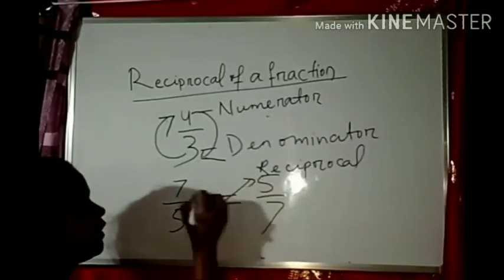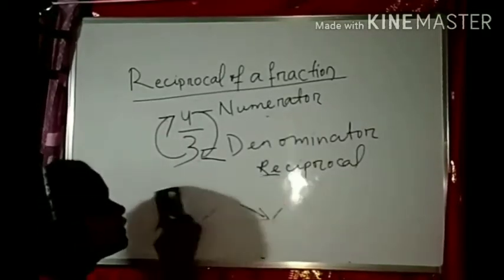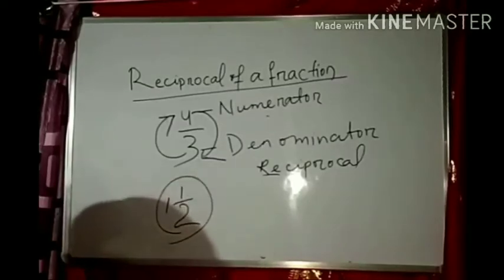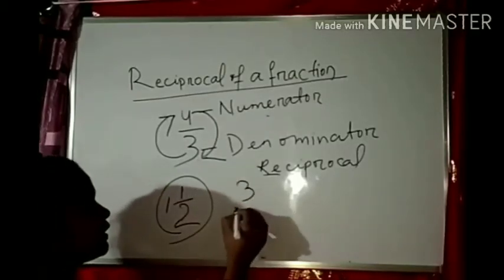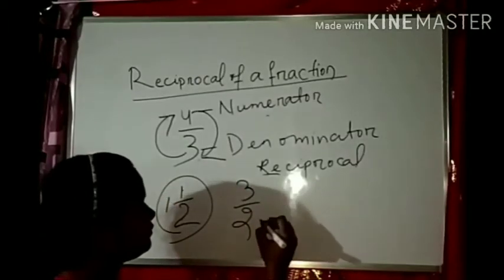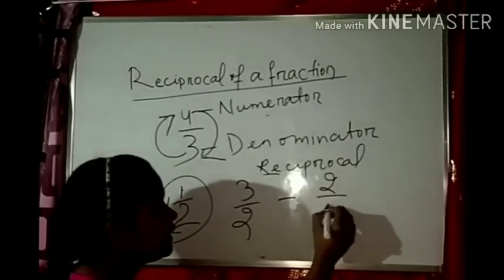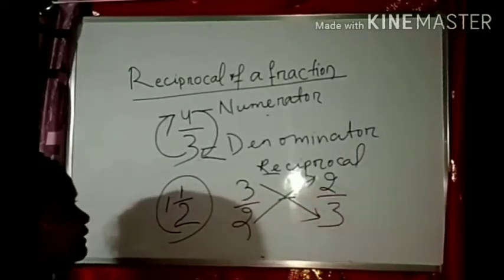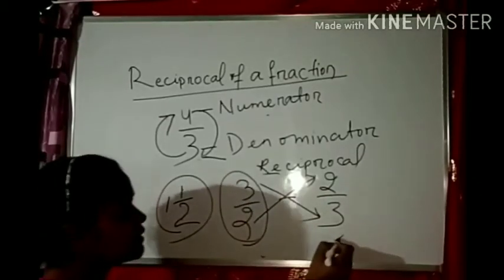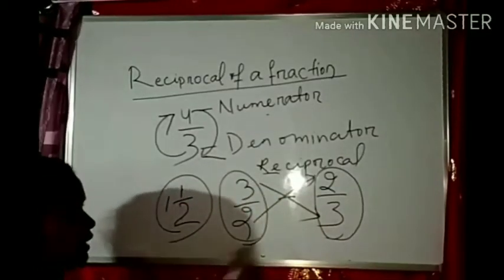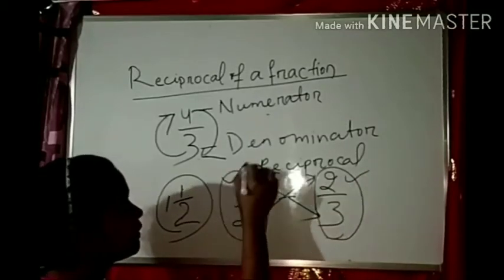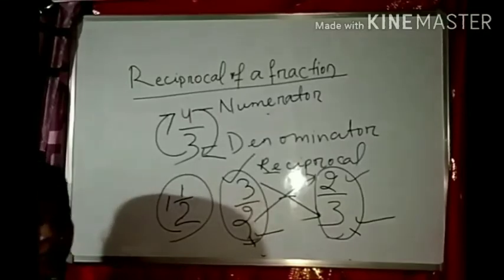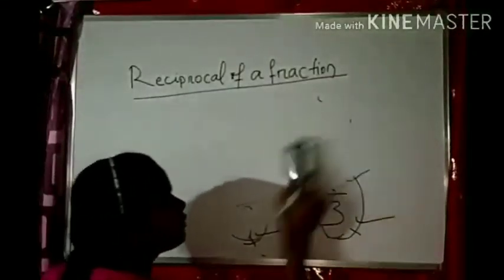Now let's see the reciprocal of a mixed fraction. Take 1 and 1 by 2. First, change this mixed fraction into an improper fraction: 2 times 1 plus 1 equals 3, so it becomes 3 by 2. The reciprocal of 3 by 2 is 2 by 3. Notice that the reciprocal of an improper fraction is a proper fraction, and the reciprocal of a proper fraction is an improper fraction.